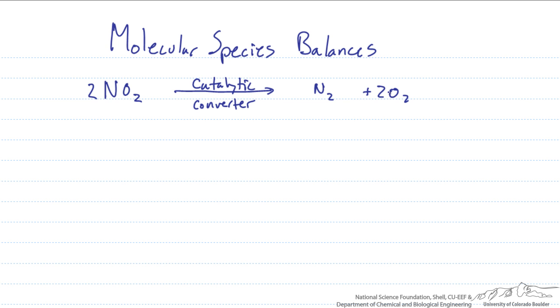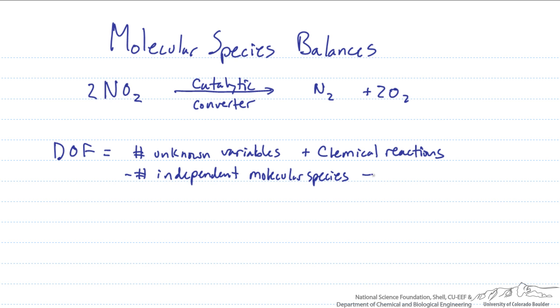So first step in this process we want to balance the equation and now we want to do a degree of freedom analysis on this problem. The degree of freedom analysis for any molecular species balance is going to be the number of unknown variables plus the number of chemical reactions minus the number of independent molecular species minus the number of other equations we have.